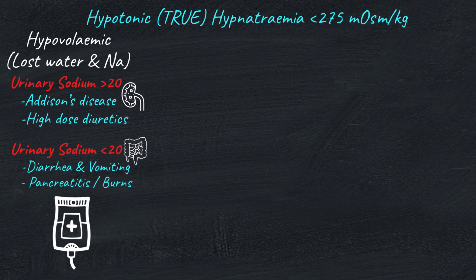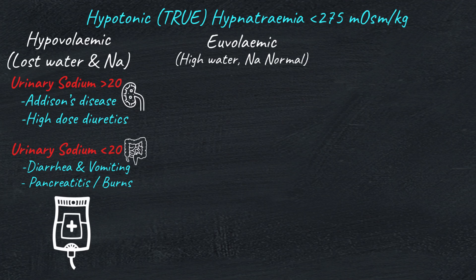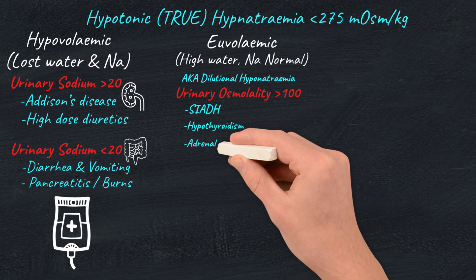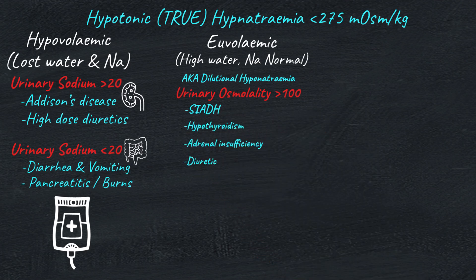If your patient's volume status is normal — euvolemic — urinary sodium is likely to be above 20, and we need to look at urinary osmolality. In euvolemic hyponatremia, there is increased total body water but normal sodium levels. Hence, sodium levels appear low in reference to total body water — this is why this type is also called dilutional hyponatremia. If urine osmolality is more than 100, this can be SIADH, but first you need to rule out hypothyroidism, adrenal insufficiency, and diuretic use, which are all other causes of dilutional hyponatremia.